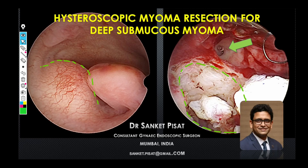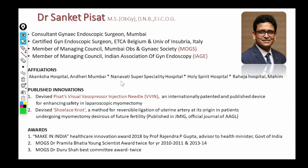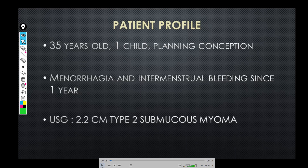Hello everyone. This is a video on Hysteroscopic Myoma Resection for a Deep Submucous Myoma. This is one of the cases which becomes very difficult for those who are starting off in their hysteroscopic career and can really be very challenging. Let us first look at the patient profile. She is 35 years old, has one child, is planning conception, and has menorrhagia and intermenstrual bleeding for the last one year. The ultrasound reveals a 2.2 cm type 2 submucous myoma.